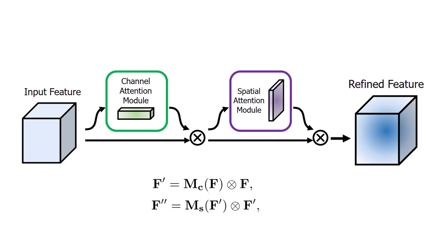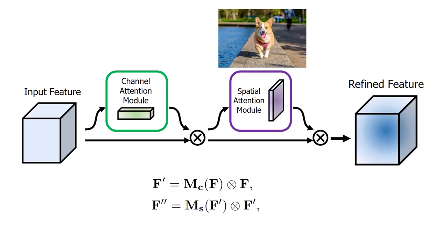For example, if we have an image of a dog, we know that the dog is located in only one small area of the image. And if we give the model an ability to learn that this area is more important than the rest, then hopefully we can get even a better result. And that's the whole idea of this paper.